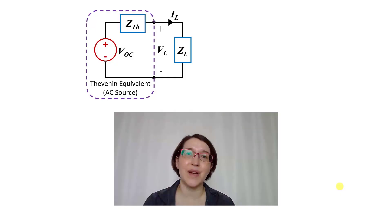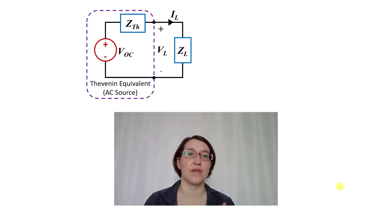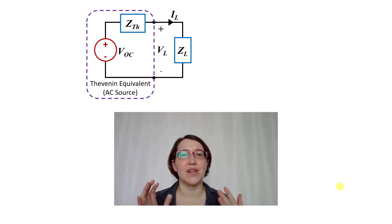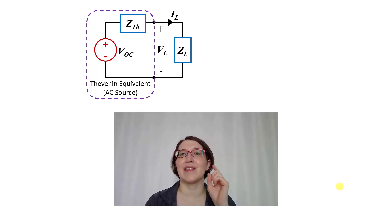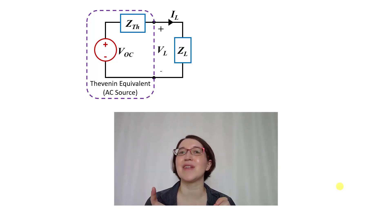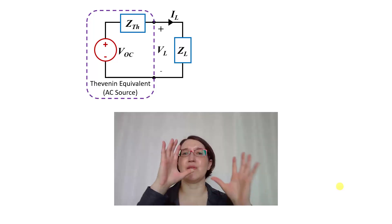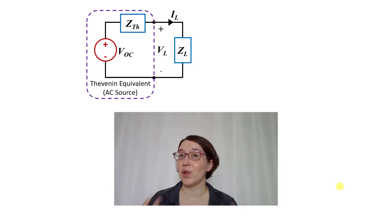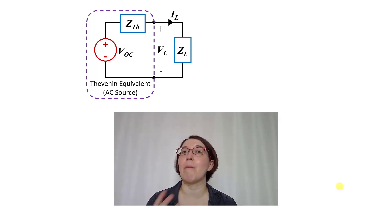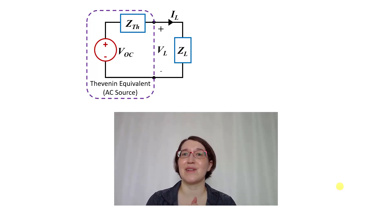Here we're looking at how to maximize the power out of a circuit that has an AC source. If you have a complex circuit, you have to get it into the Thevenin equivalent, which is an AC voltage source and the Thevenin impedance, which has a real component and a reactive component. We're going to look at how, when you connect an impedance load, what value of the load is going to maximize the power out of that source.